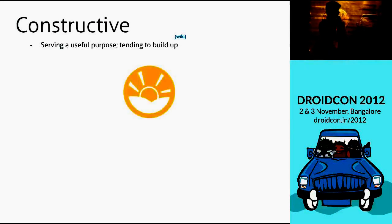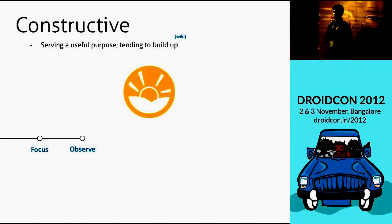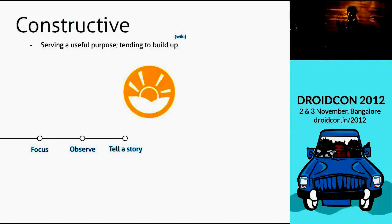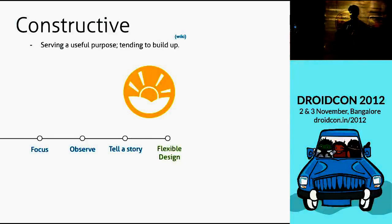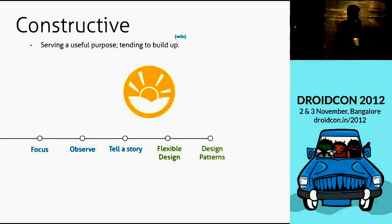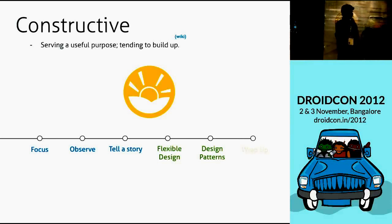Let's see the agenda. By the end of the session, we'll cover what focus is and what it has to do with design. We'll see what you should observe when designing — all completely for Android, nothing about HTML or iPhone. We'll see how to tell a story, because every app has a story, and if you make that story promising and simple, your app is the next big thing. We'll get a little technical on flexible designs, since Android has a huge range of device sizes. Then we'll see some design patterns released recently with enhancements after Ice Cream Sandwich and Jelly Bean, and wrap up with questions.